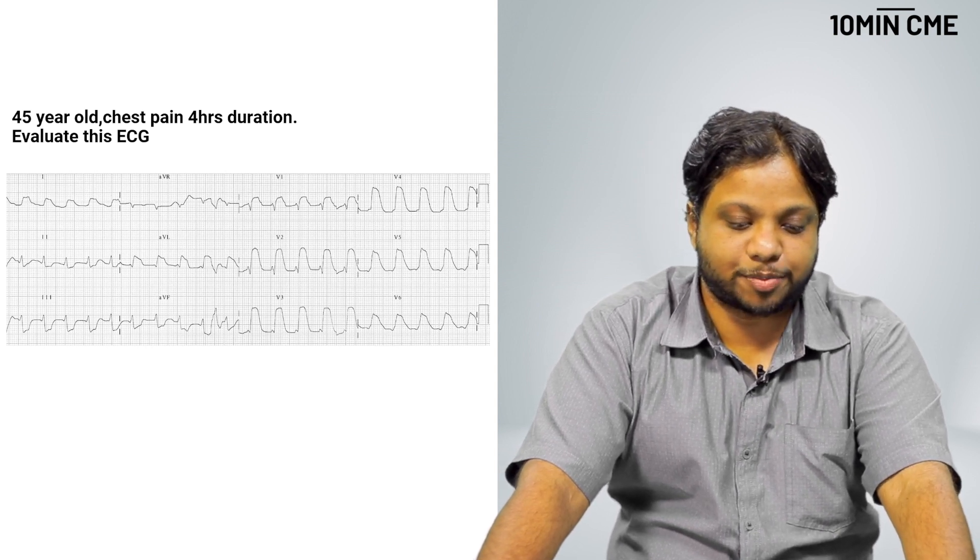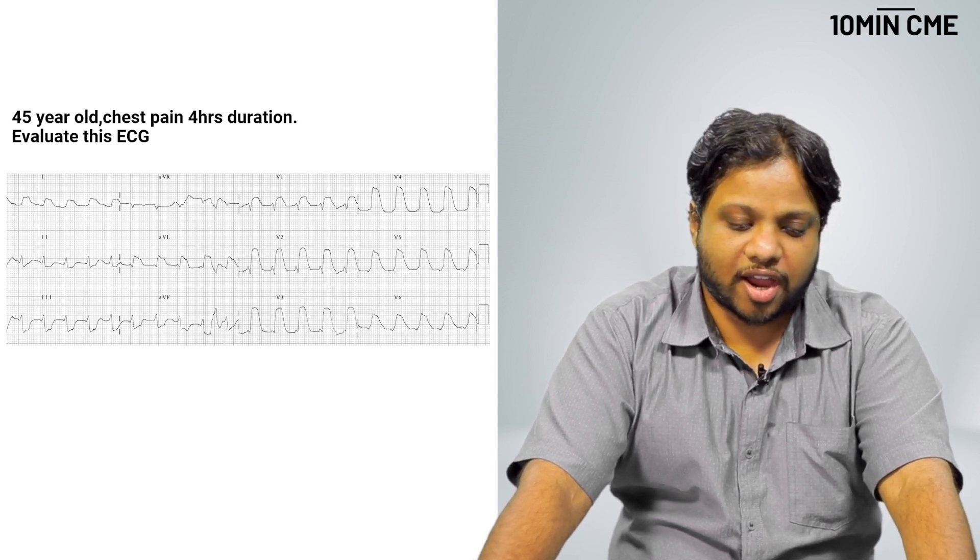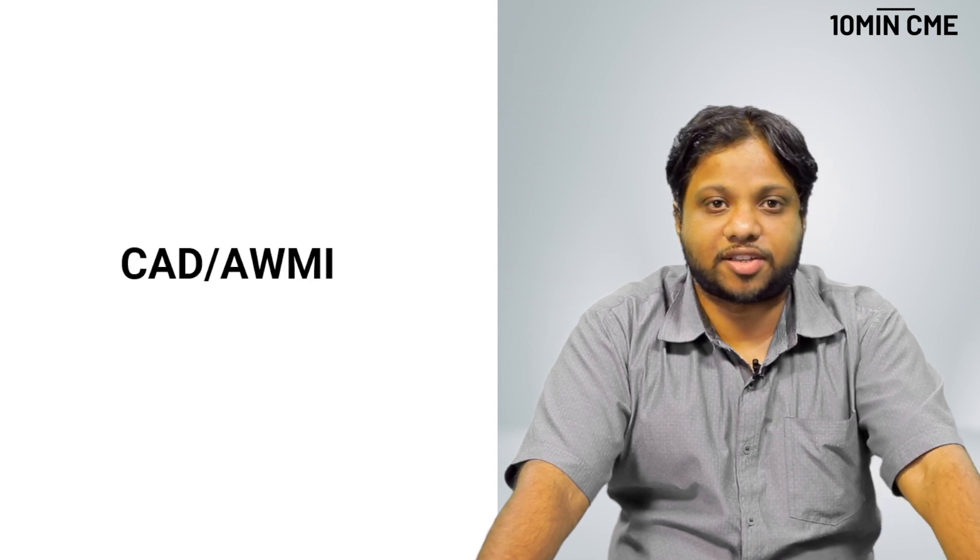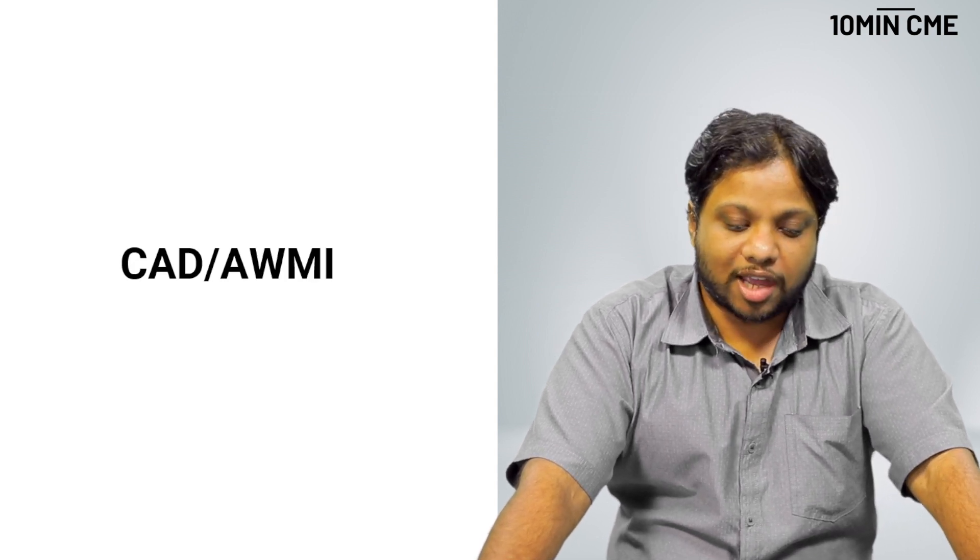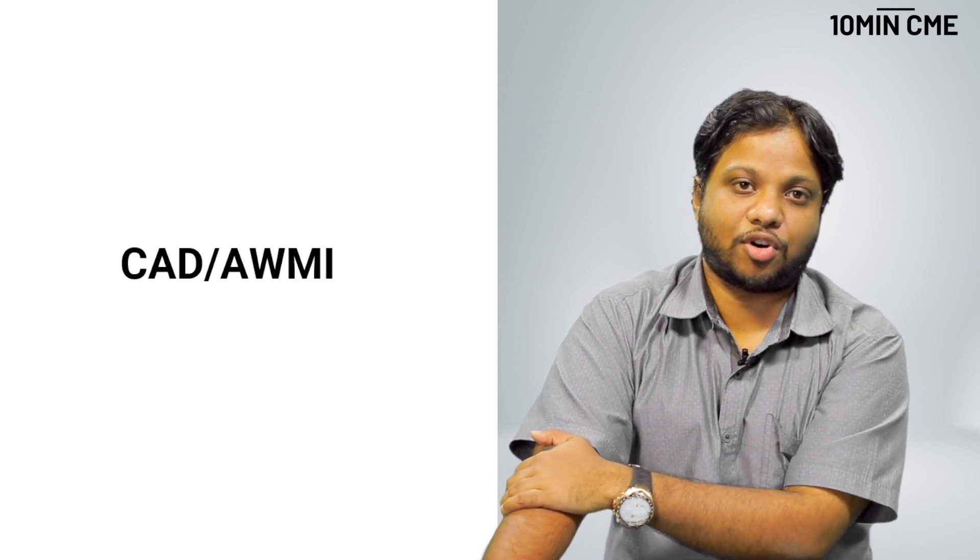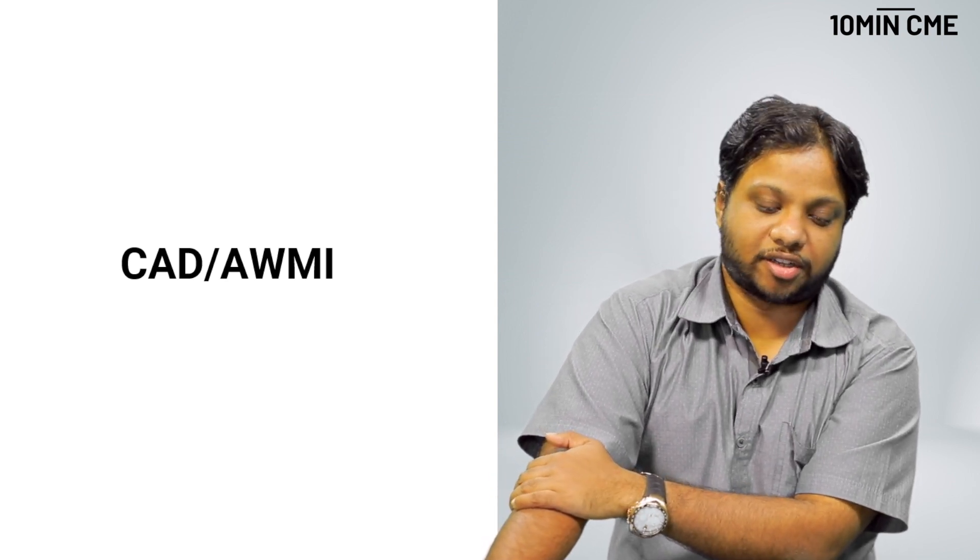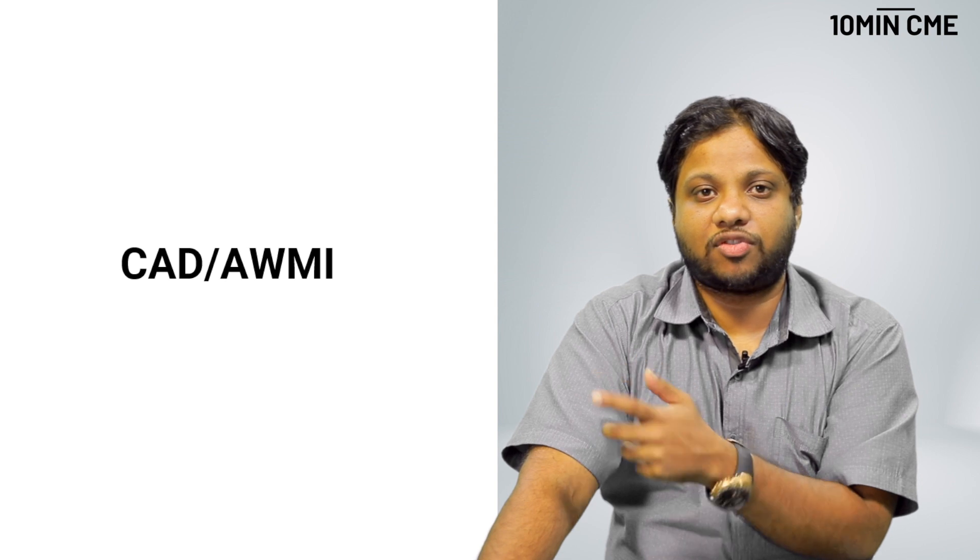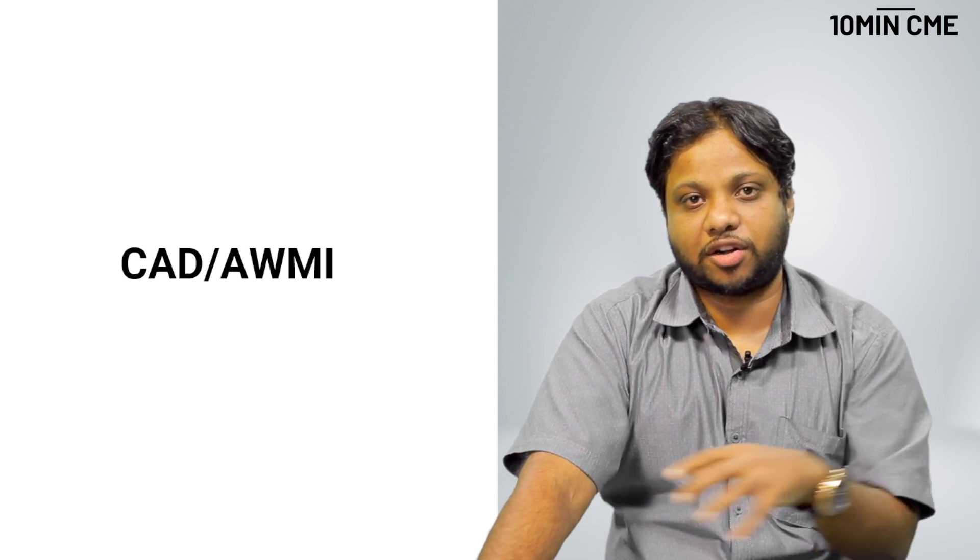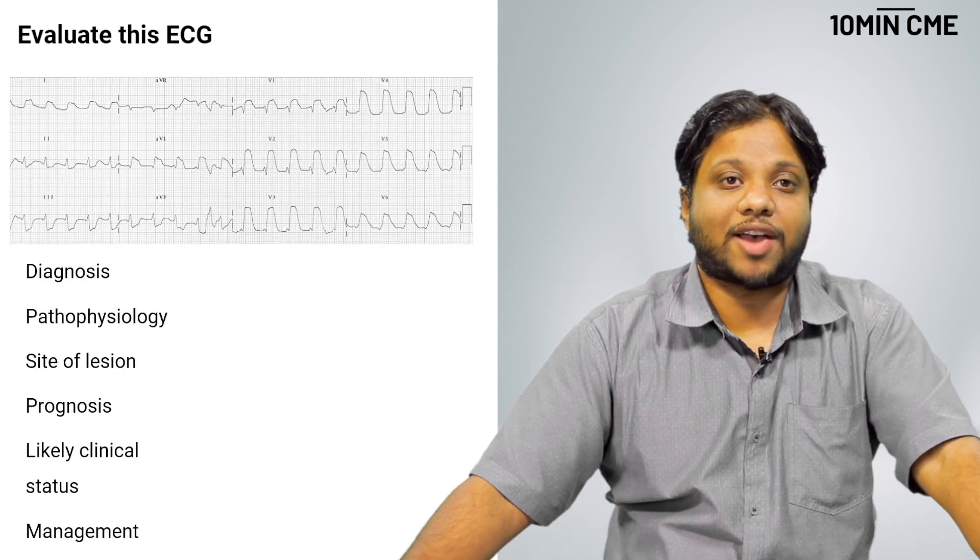Again, a 45-year-old chest pain of four hours duration. The diagnosis is pretty simple. It is a CAD anterolateral MI. I bet most of you people will write this as CAD anterolateral MI and will refer it to a cardiology center. Is there more information that you can get from this ECG? What is this ECG hiding? Let us evaluate this ECG.